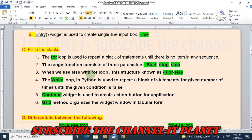When we use else with for loop, this structure is known as for else. The while loop in Python is used to repeat a block of statements for given number of times until the given condition is false. Continue widget is used to create action button for application. Grid method organizes the widget window in tabular form. So these are the green color words which are the answers for fill in the blanks.